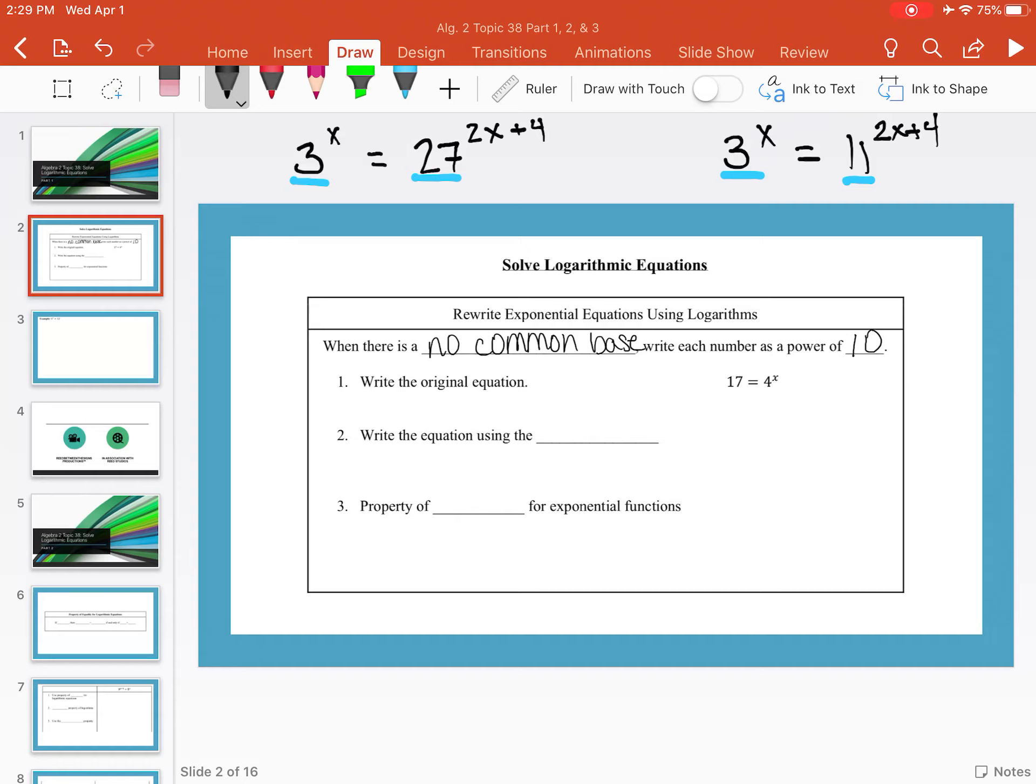So in this example, we're given the equation 17 equals 4 to the x, and ideally we need to figure out what x is to make this statement true. So we're going to write the equation using the powers of 10 so that we have 10 to the log of 17